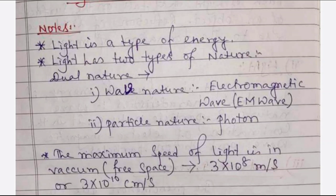Another nature is particle nature, and the name of the particle of light is called photon. That's why the term in biology is photosynthesis — because synthesis means preparation of food, and photo means light. Plants prepare food in the presence of light. The maximum speed of light is in vacuum, which is 3 × 10⁸ meters per second, or 3 × 10¹⁰ centimeters per second — you can imagine how great the speed of light is.